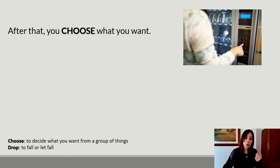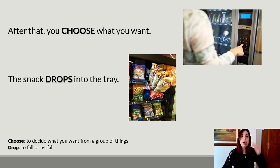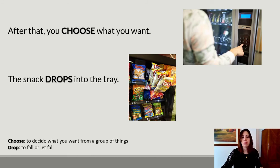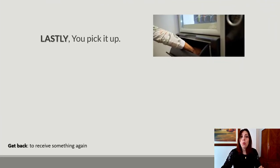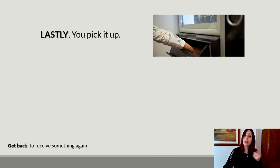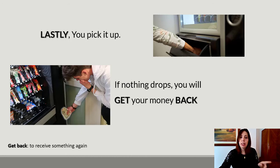Next, you have to choose what you want. Choose, decide — select what you want from the group of things. And when you have chosen, the snack drops in the tray. When it has dropped, lastly you pick it up. If for some reason the vending machine didn't work, you will get your money back. Get back — a phrasal verb — means to receive something again. So you get your money back.